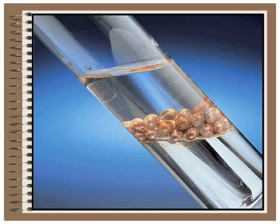You can see from this picture, in the test tube, this happens to be mercury sitting on the bottom of the test tube. It has a higher density than the copper, which has a higher density than the water.